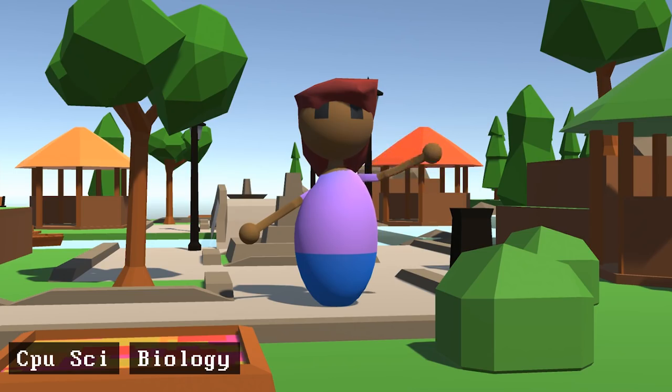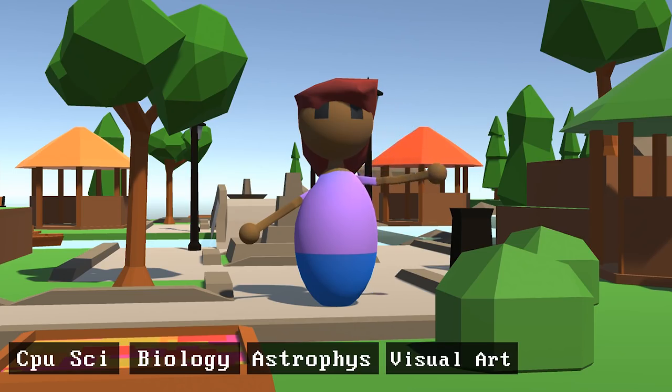Now, Clarissa is sure that she wants to major in one of these five interests of hers: computer science, biology, astrophysics, visual arts, and marketing, but is undecided at the start of the simulator.